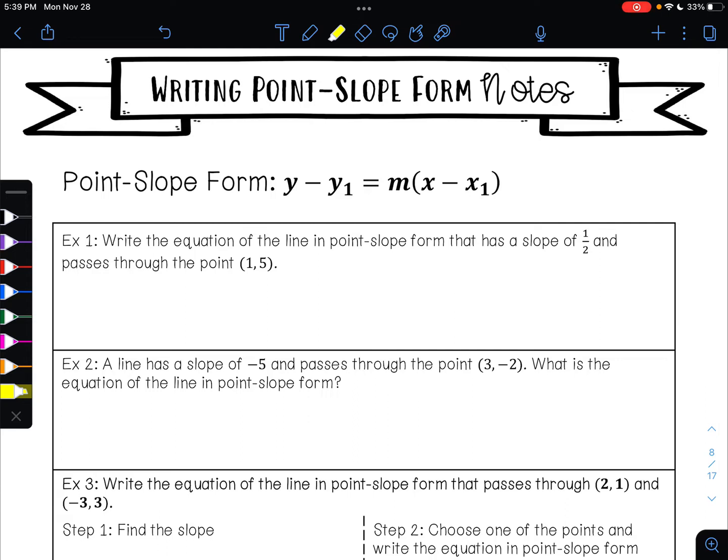In this video, we're going to be learning how to write equations in point-slope form. So as a reminder, point-slope form is y minus y₁ equals m times x minus x₁.